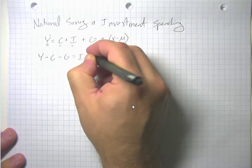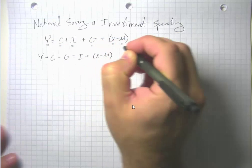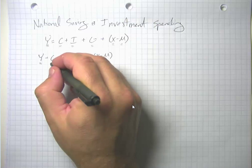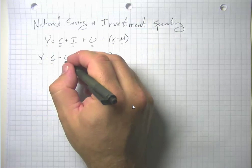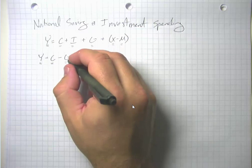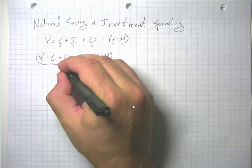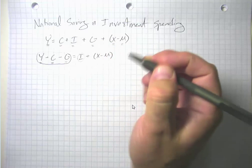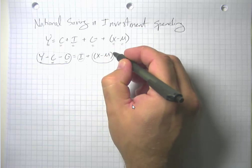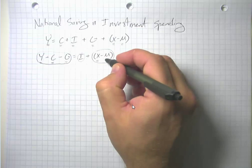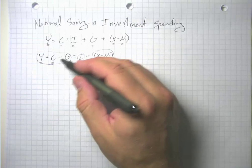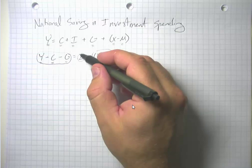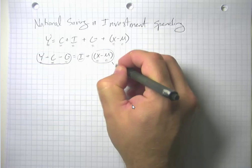I'm going to shift the C and the G over to this side. So now we're talking about total GDP, and we subtract off what we've used for consumption spending and what we've used for government spending. This is essentially what we have left over to either increase our capital stock through investment spending, or we can send more resources overseas than we bring back — creating positive net exports.